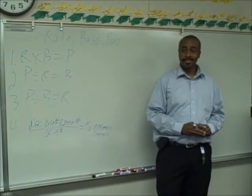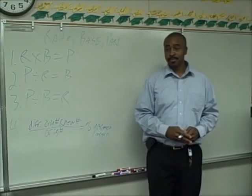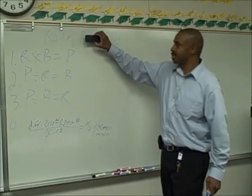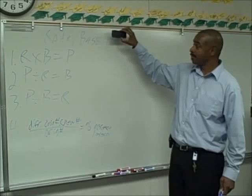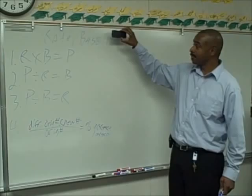So what makes a percent problem a problem? The whole? That would be the base. So what makes a percent problem a problem is simply that you're missing one of these parts. You either know the rate and the part and you're looking for the base, or you know the rate and base and you're looking for the part, or you have the part and the base and you're looking for the rate. So what makes a percent problem a problem is that you're missing one of these elements.